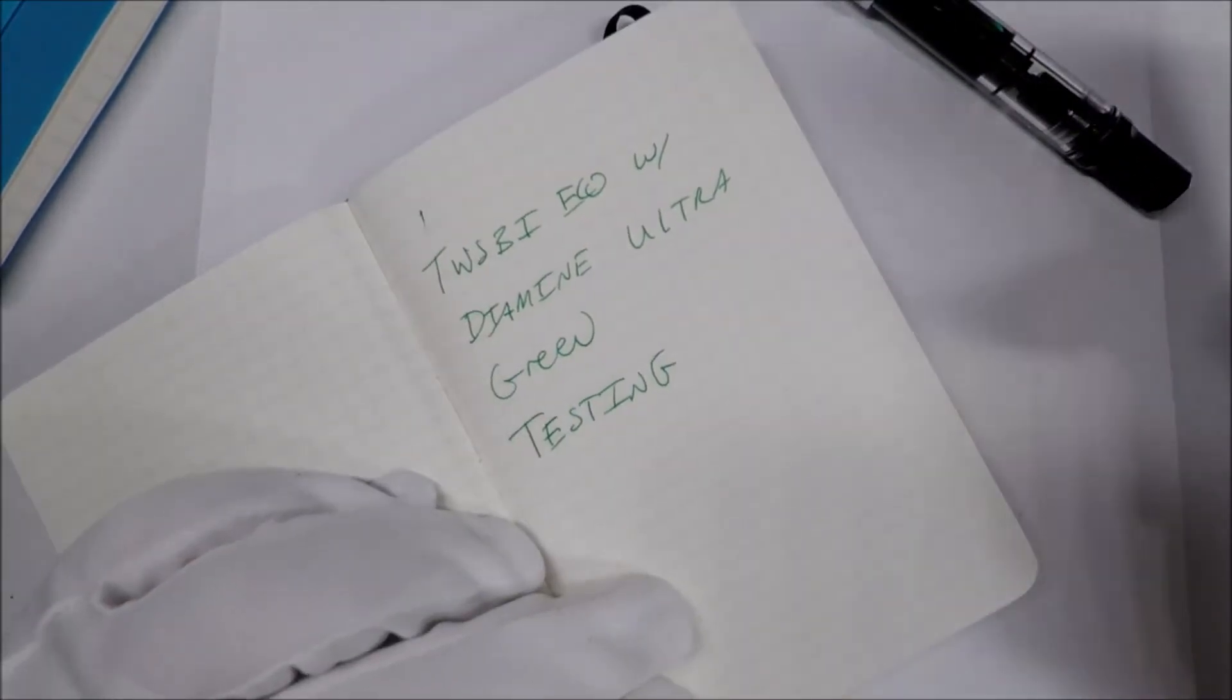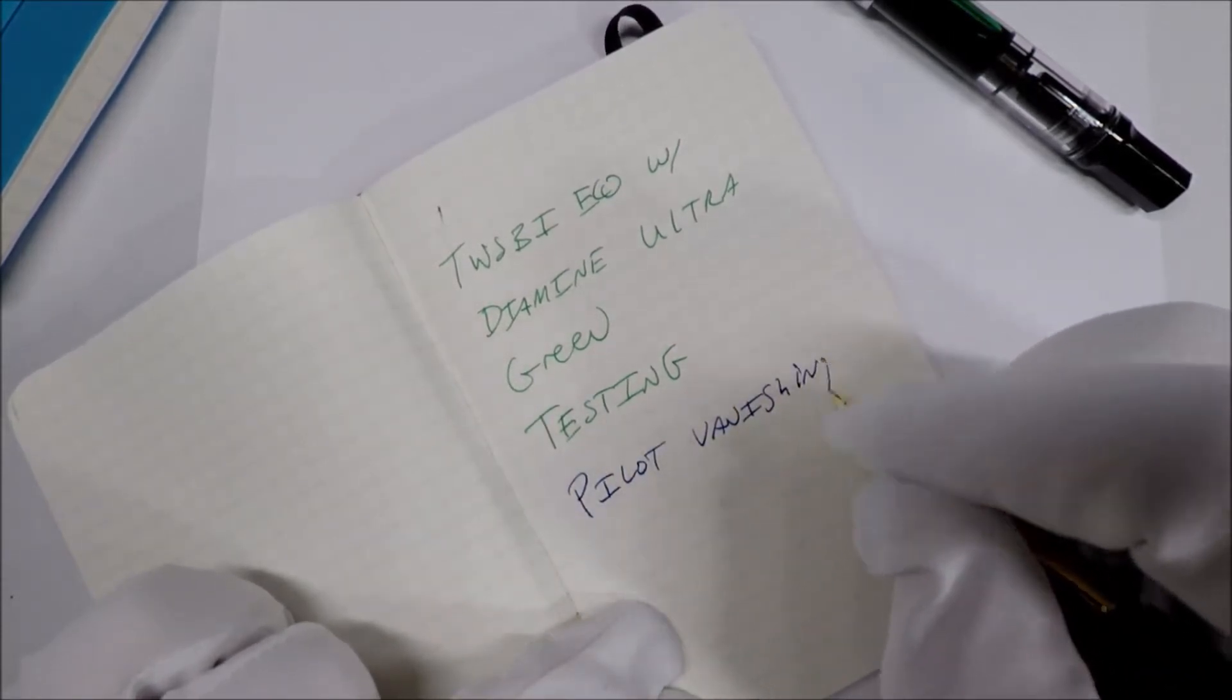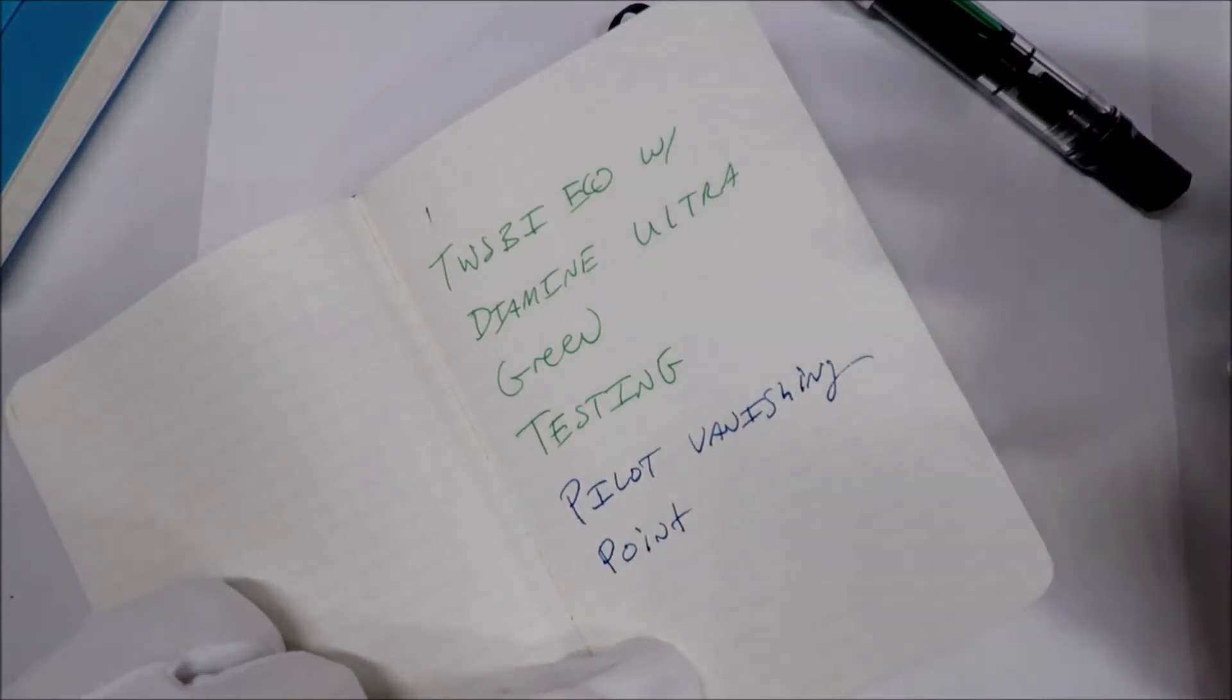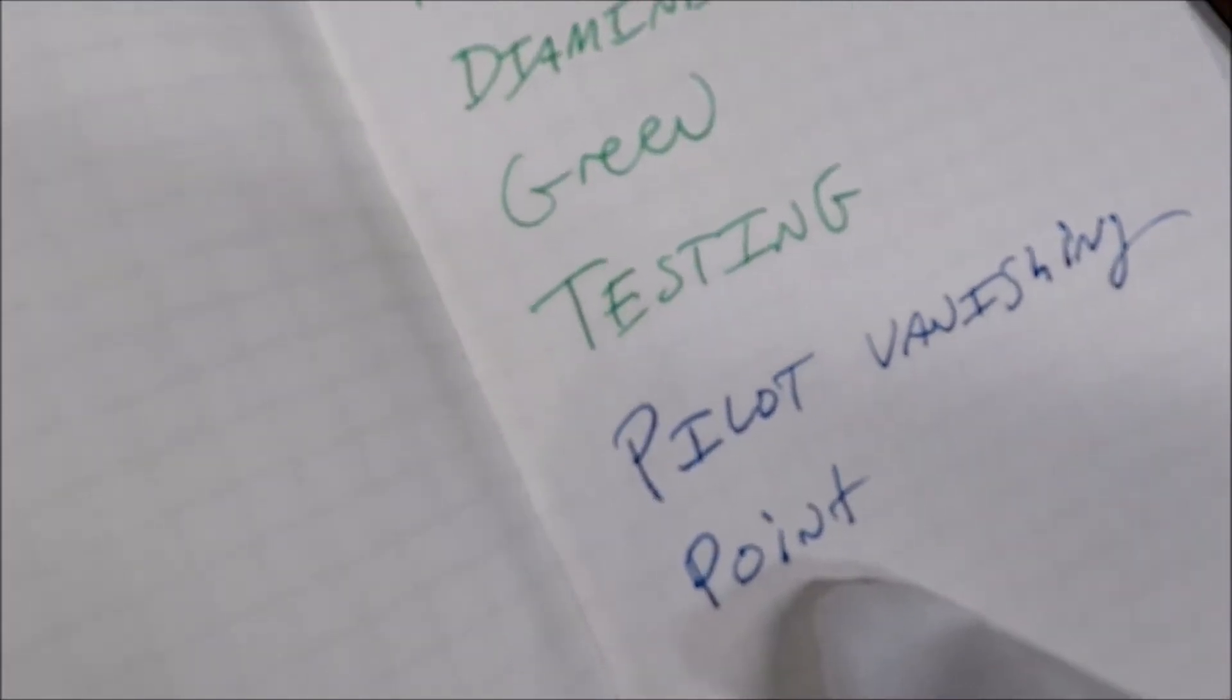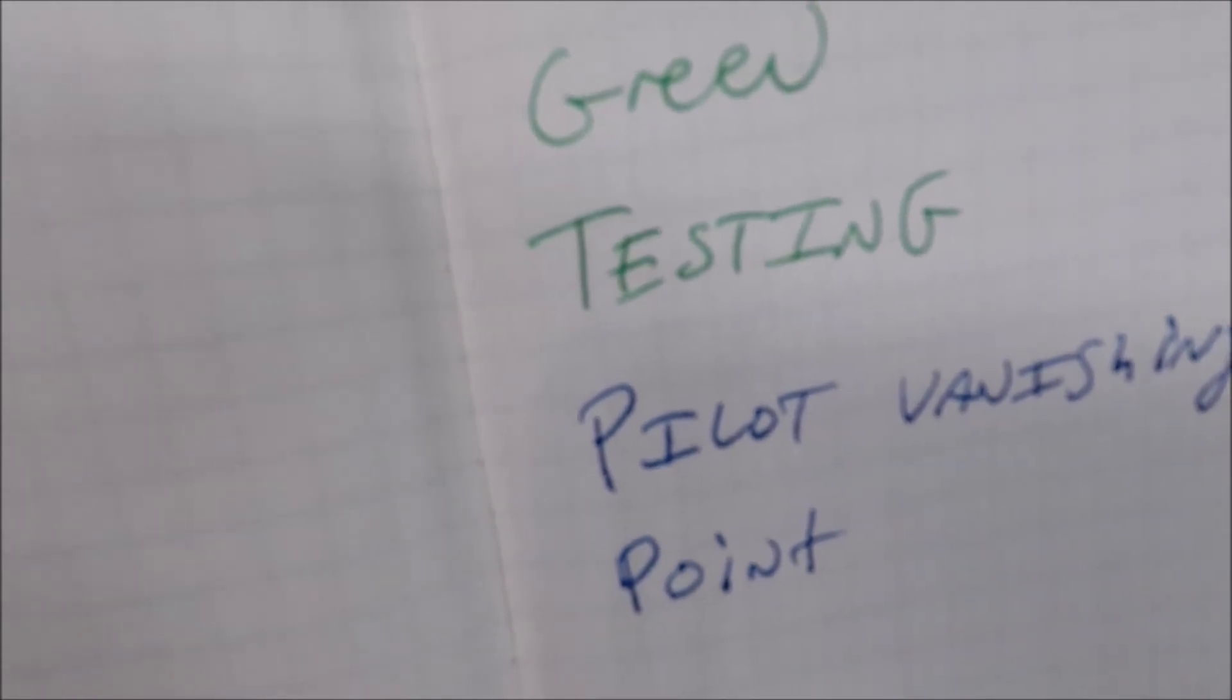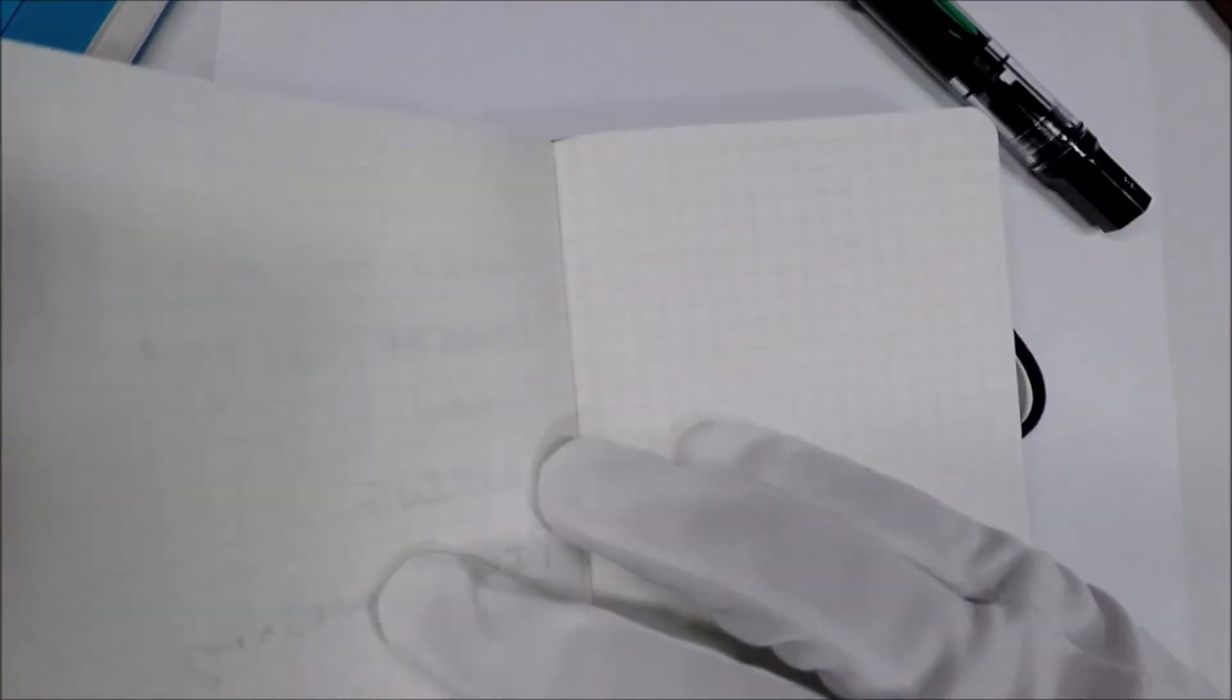And let's try a pilot vanishing point. That's not bad at all. Now, both of these are fine points. So, that may matter. That's kind of interesting. Do y'all see that? Let me show you. You see there's a little bit of... Can y'all see it? There's a little bit of feathering with that right there. With the pilot vanishing point. There's not any at all that I see with the Twisbi Eco. That looks really good. But there's a little bit with this. Let's see if it goes through. It doesn't seem to go through and bleed through at all. That's not too bad.